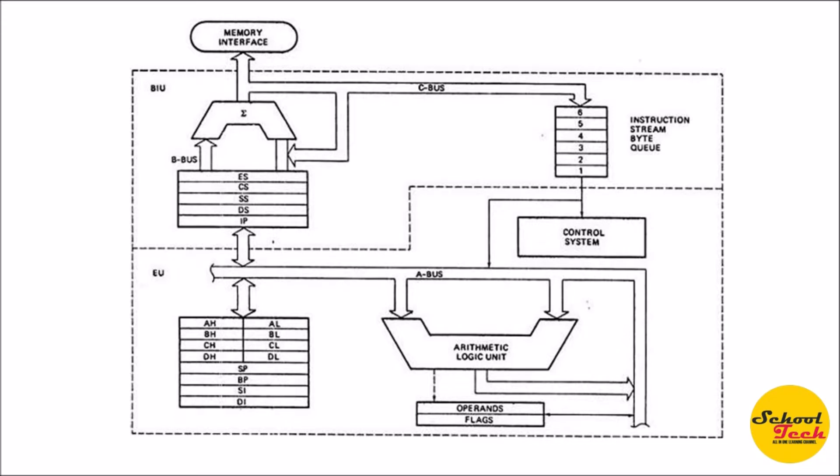The 8086 microprocessor is a 16-bit processor which uses a two-stage pipeline architecture with functional blocks of BIU and EU. BIU is the Bus Interface Unit — the part of the processor used to fetch instructions from memory like RAM. EU is the Execution Unit — the part of the processor which performs decode and execution.